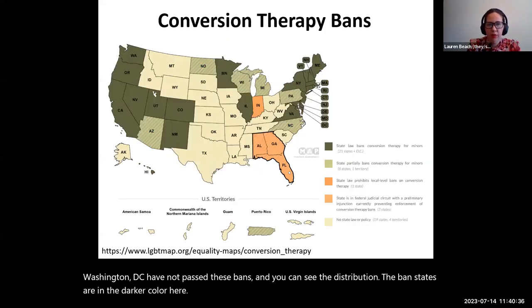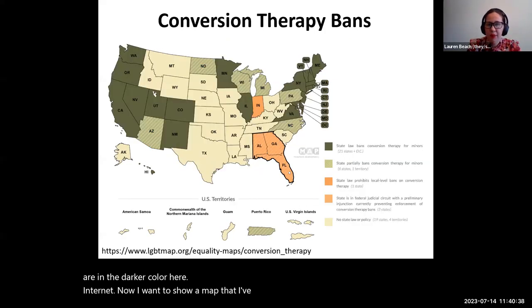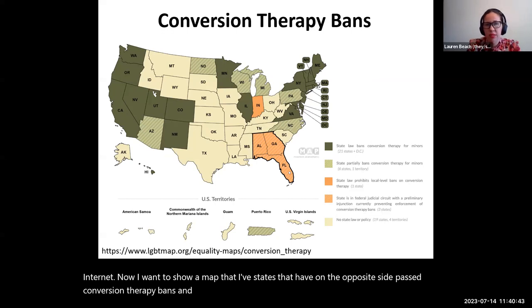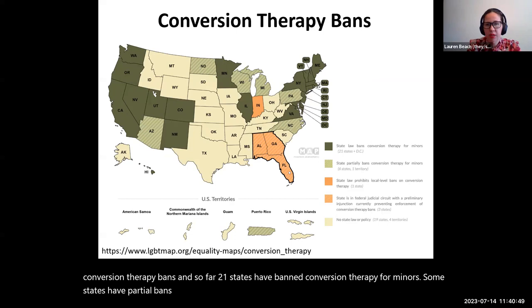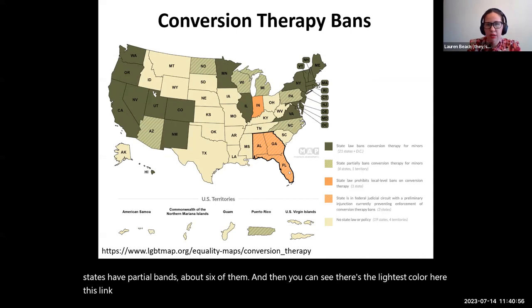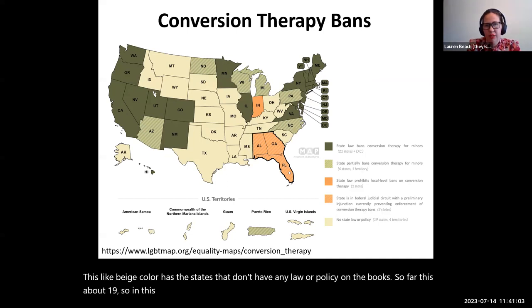On the opposite side, here is a map of states that have passed conversion therapy bans. So far, 21 states have banned conversion therapy for minors. Some states have partial bans — about six of them. And then you can see the lightest beige color represents states that don't have any law or policy on the books so far — about 19 states. In this case, the states that don't have a positive law are the ones in the lightest color.